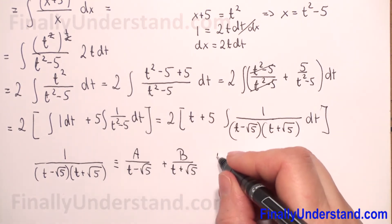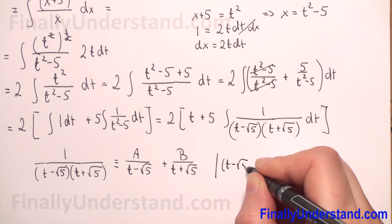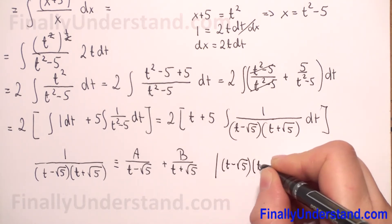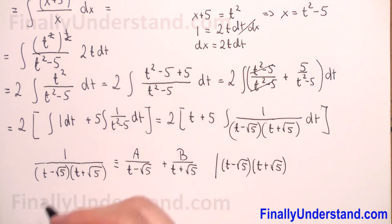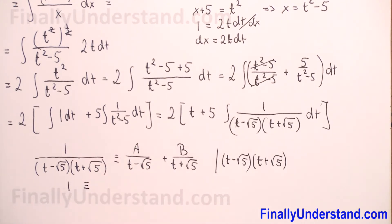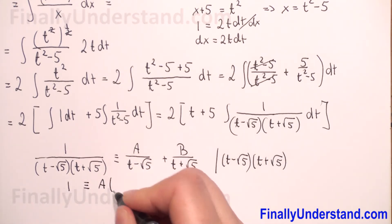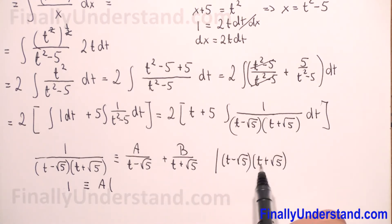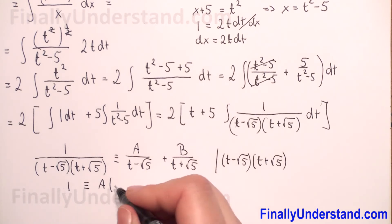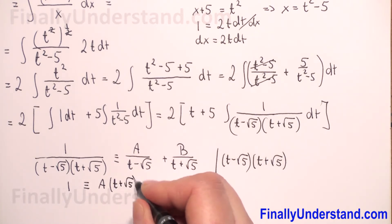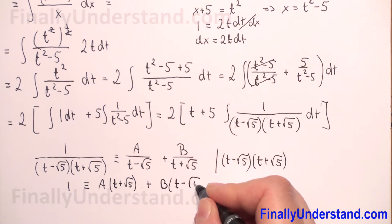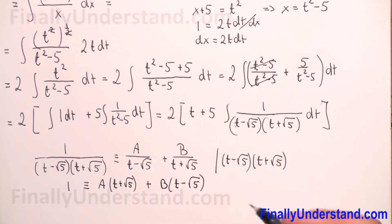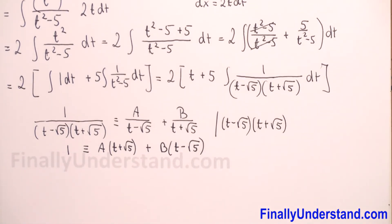We multiply both sides by (t minus square root of 5)(t plus square root of 5) to eliminate the denominators. On the left side we have 1, identically equal to A times (t plus square root of 5) — since t minus square root of 5 reduces — plus B times (t minus square root of 5). To find A and B I will use the substitution method.